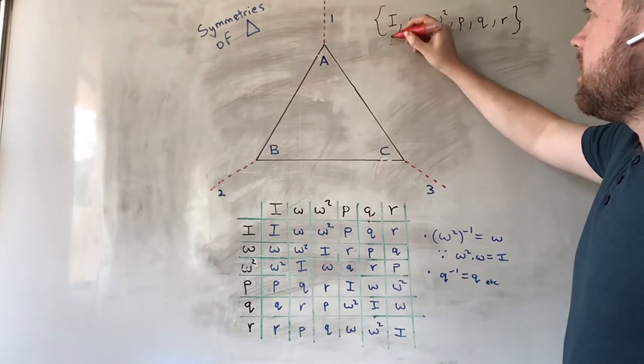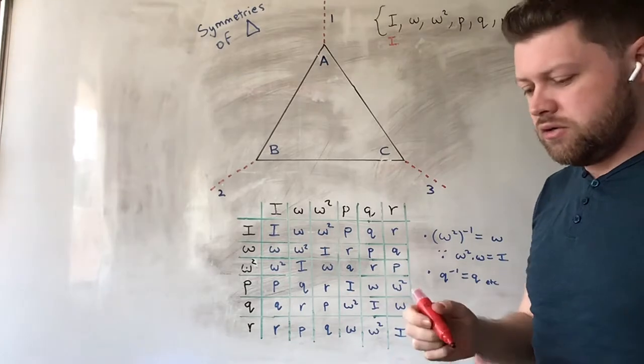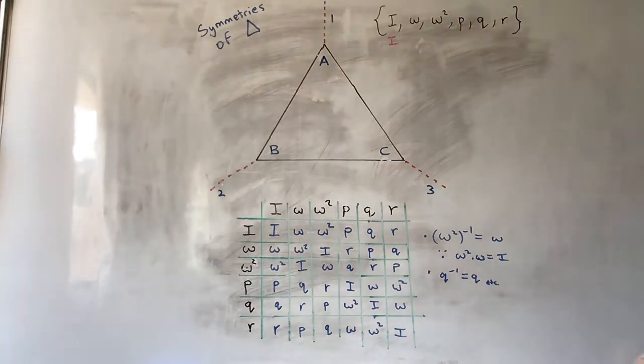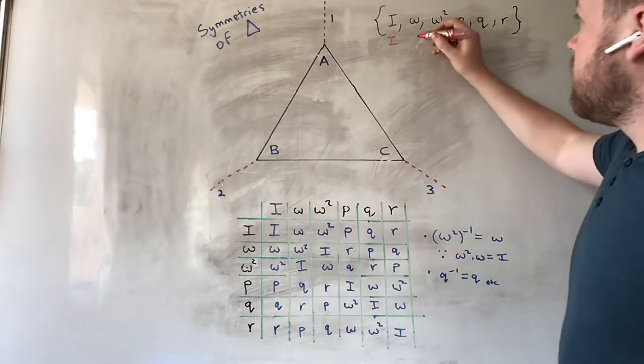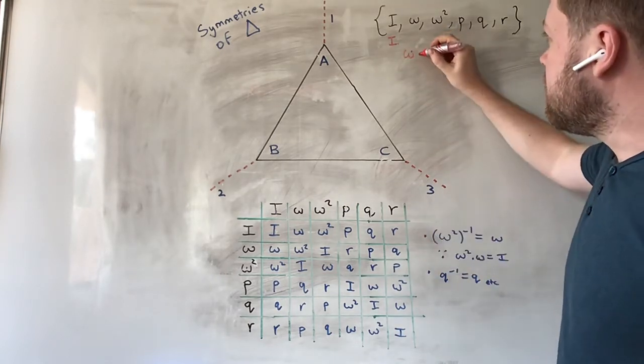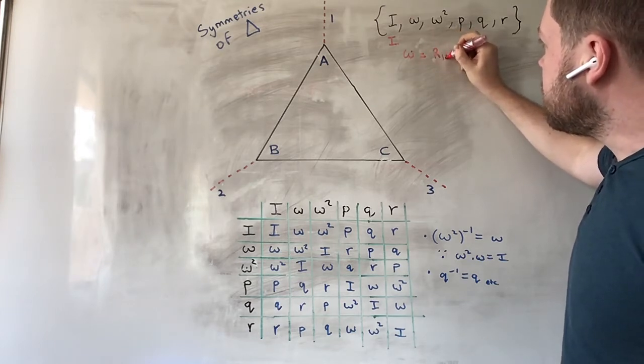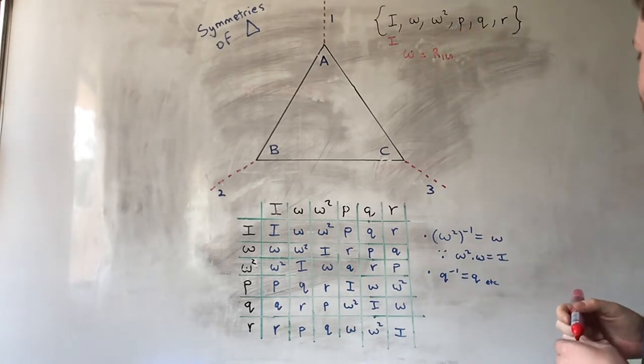I is the familiar identity element, the do-nothing transformation. Omega, or ω, I'm taking to be rotation of 120 degrees.